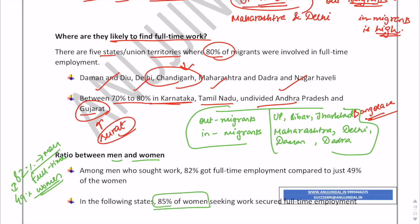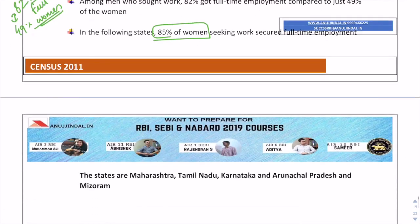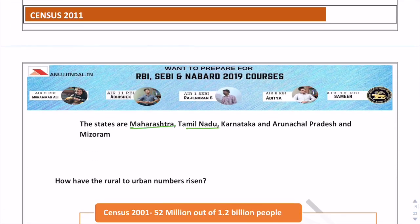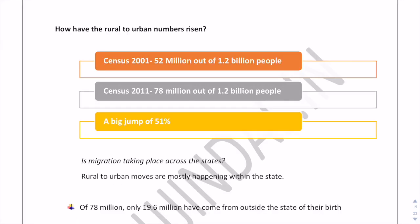However, there are some exceptions for women in certain states. In Maharashtra, Tamil Nadu, Karnataka, Arunachal Pradesh, and Mizoram, 85% of women get full-time employment. So while overall only 49% of women migrants get full-time work, these five states are exceptions where the figure rises to 85%.